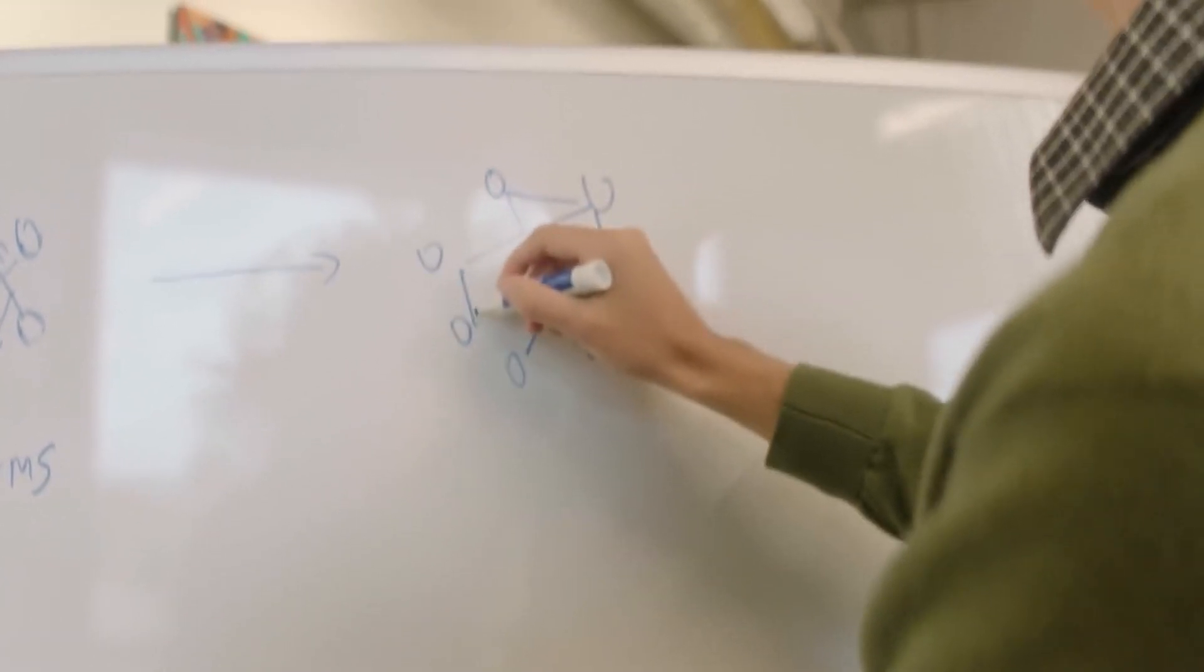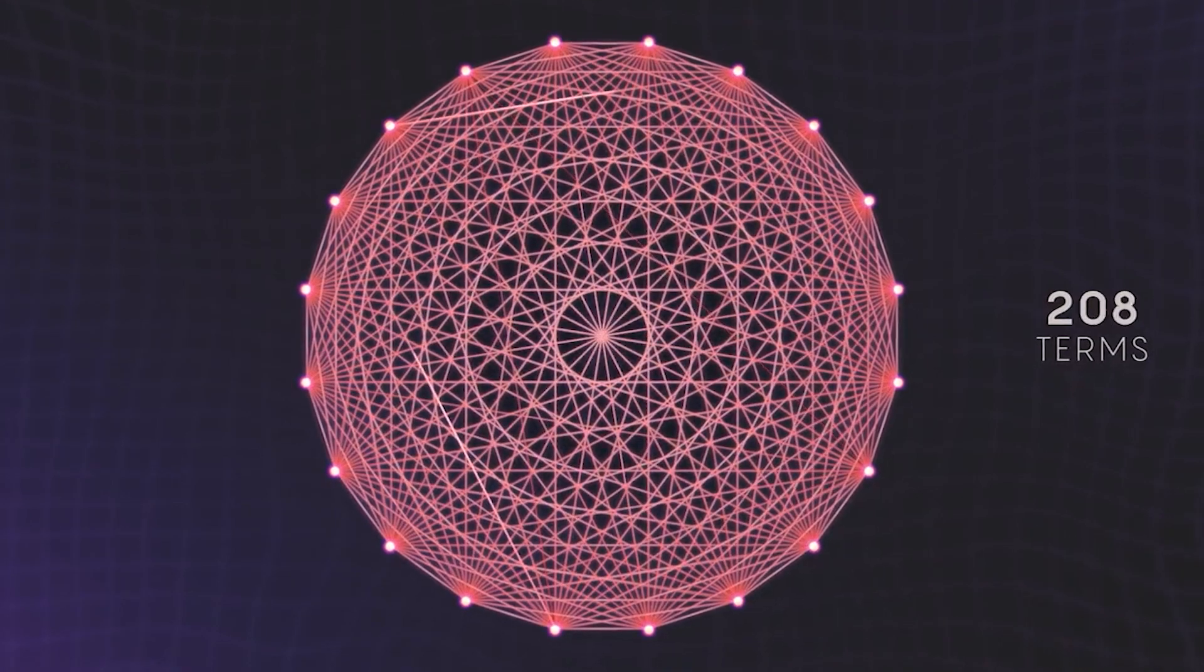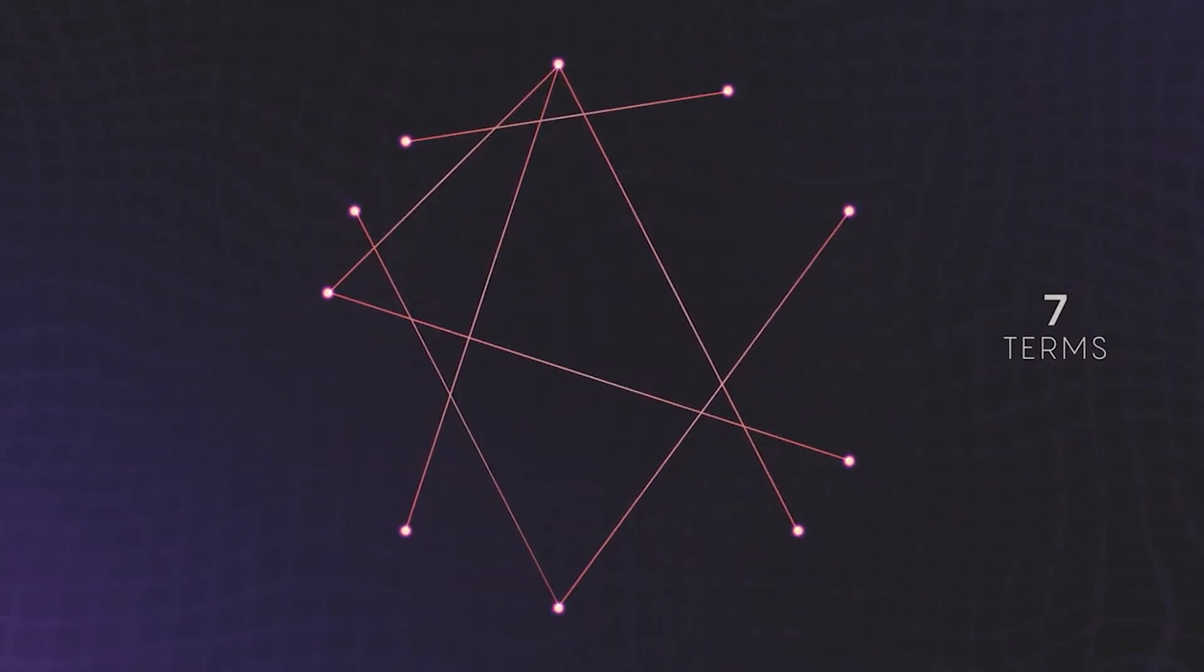Astonishingly, through machine learning, the initial system consisting of 210 terms was distilled into a mere seven, maintaining its original integrity while being compacted into a manageably small system. It was at this moment that the impossible seemed suddenly within reach.